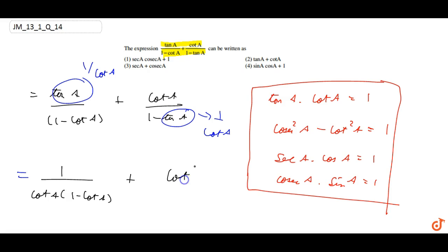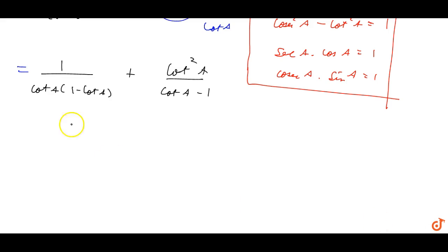If we multiply, we get cot A upon cot A minus 1, and cot square A upon cot A minus 1. Then we have to take minus common as well. We can take minus common then to make positive and negative.